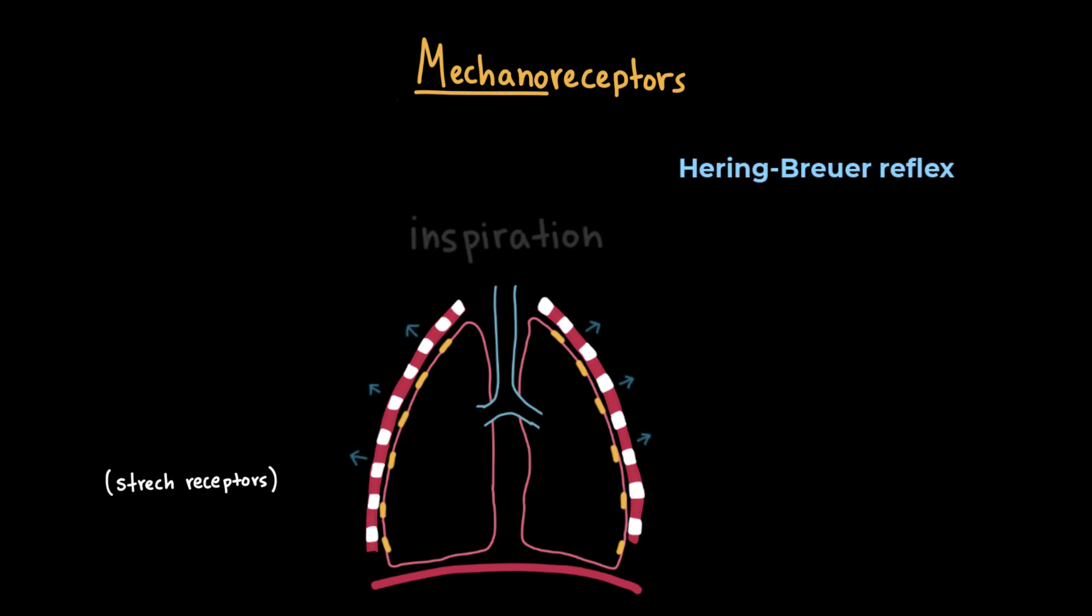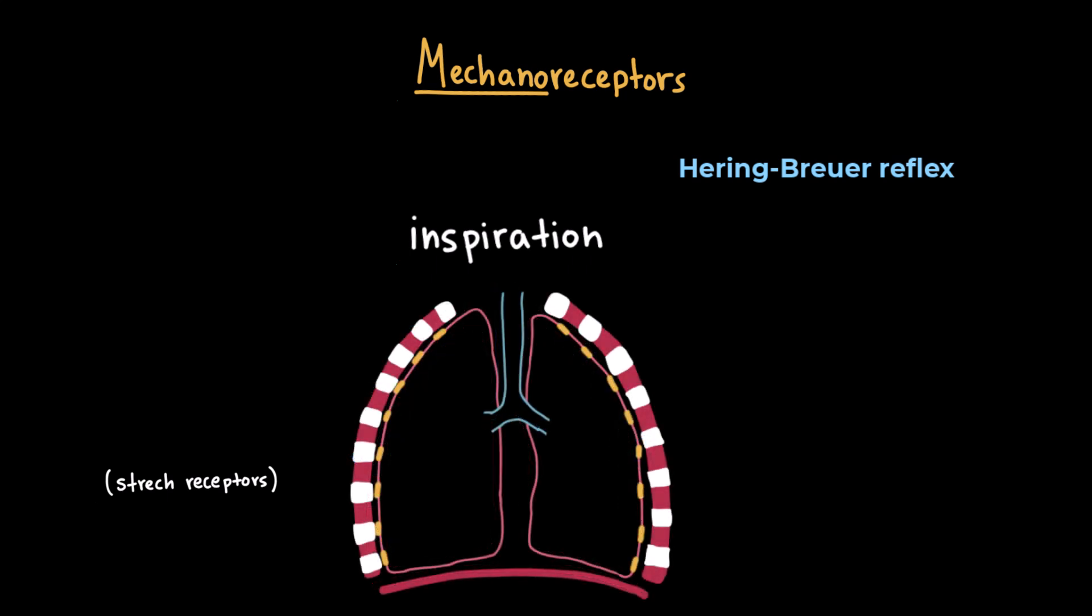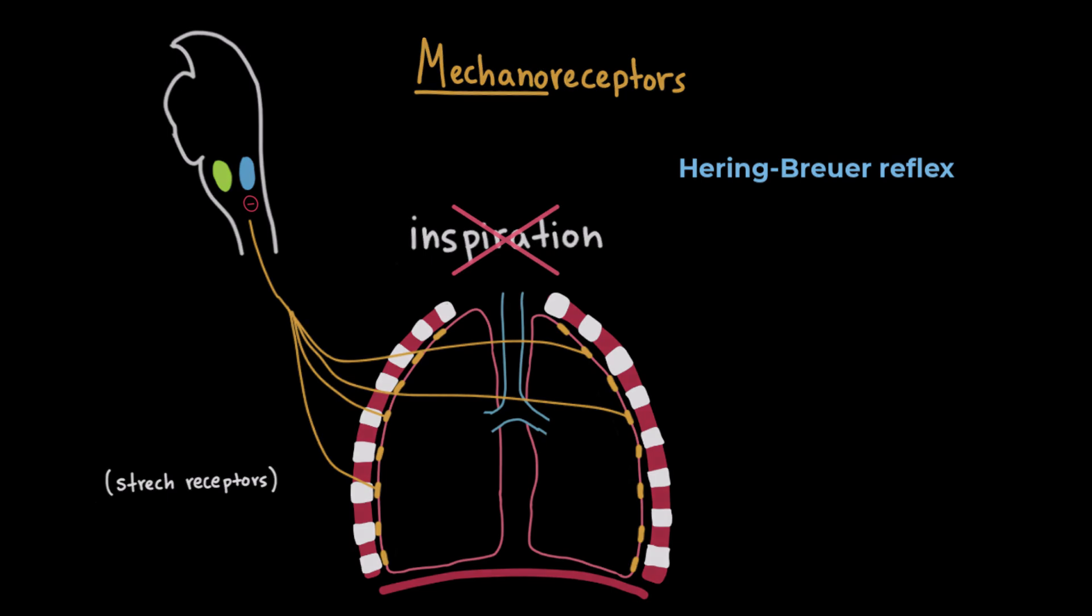When the lungs inflate during inspiration, these stretch receptors become activated and they send signals to the brainstem leading to the inhibition of the respiratory centers in order to stop further inspiration. This helps to prevent overinflation and protect the lungs.